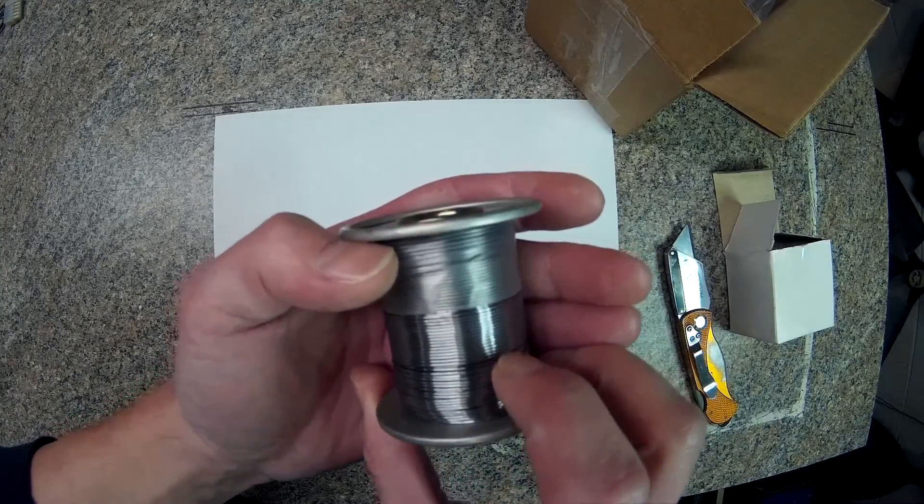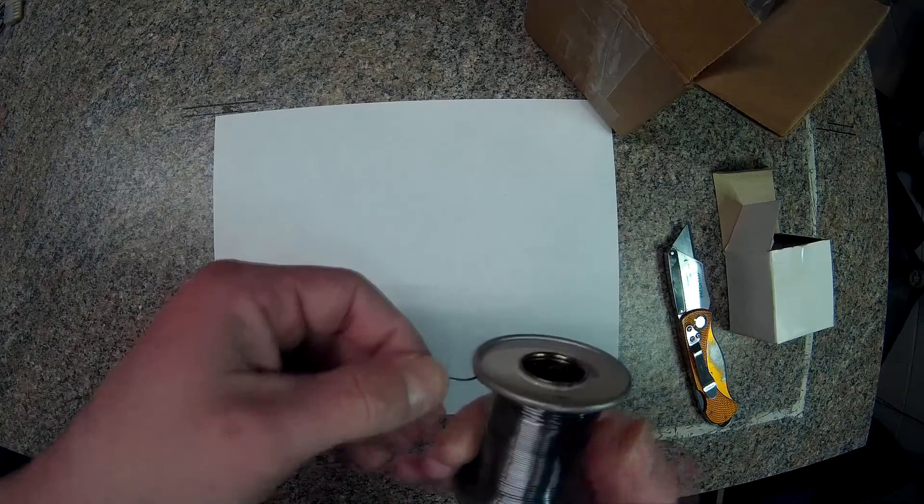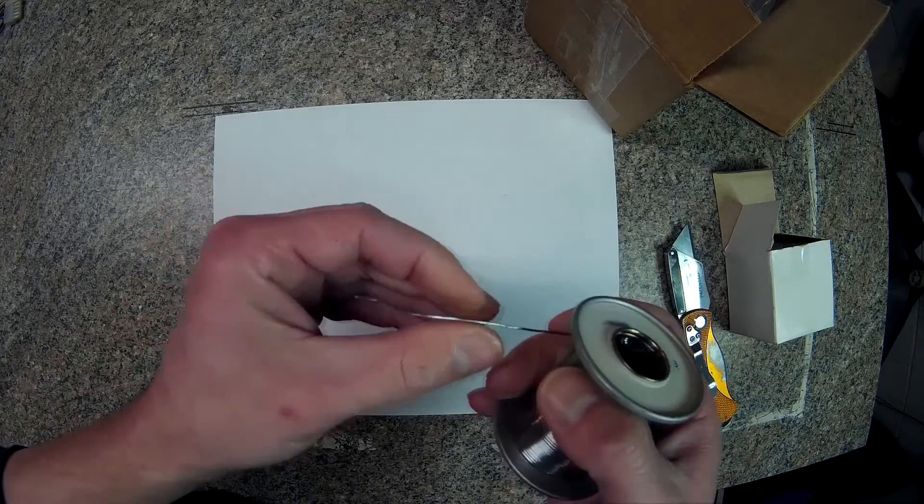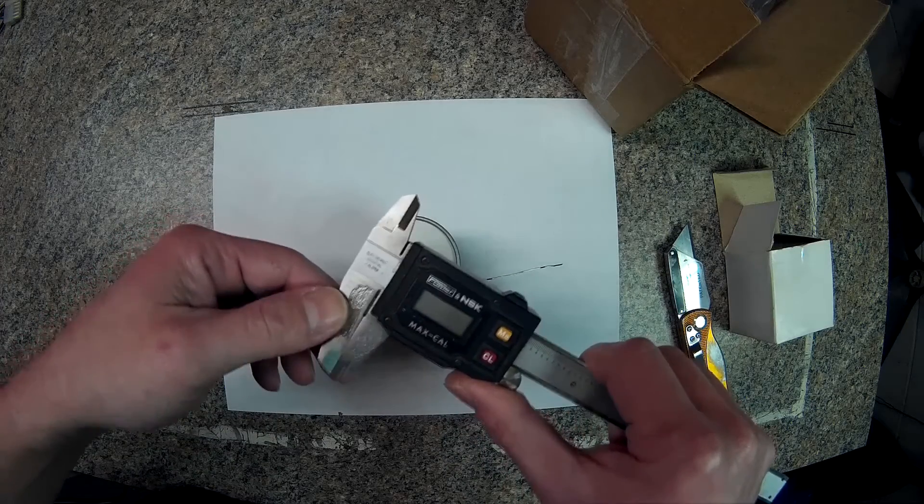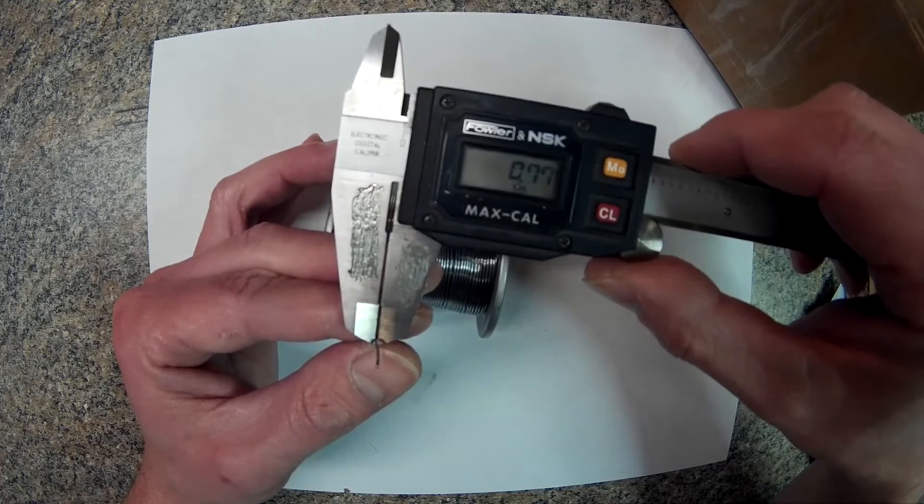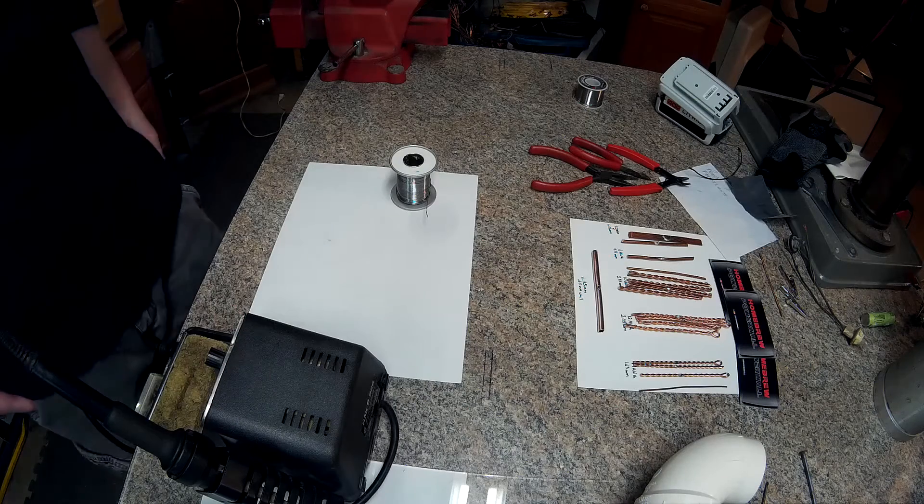We'll get out the old trusty electronic digital caliper and it measures in roughly 0.77 millimeters. Okay, I will probably test at least a couple of them here. We'll go ahead and do the twisted 10 and the twisted 12.